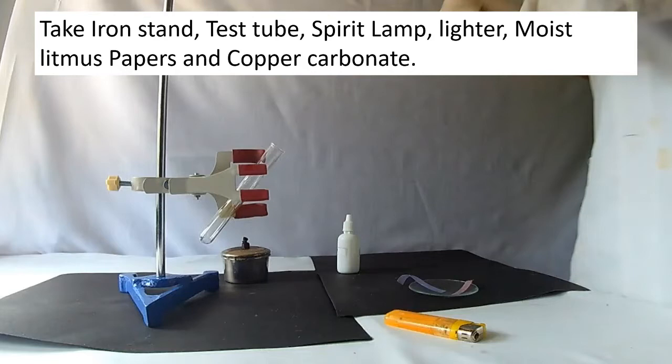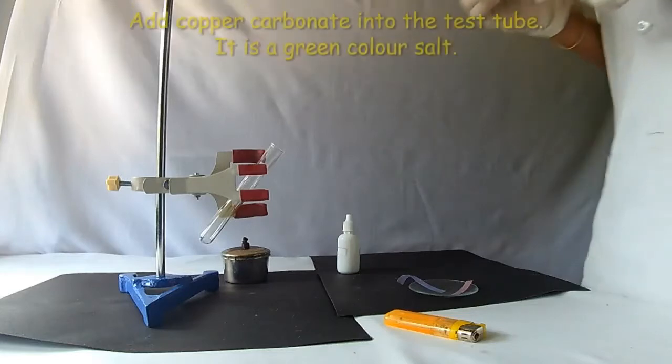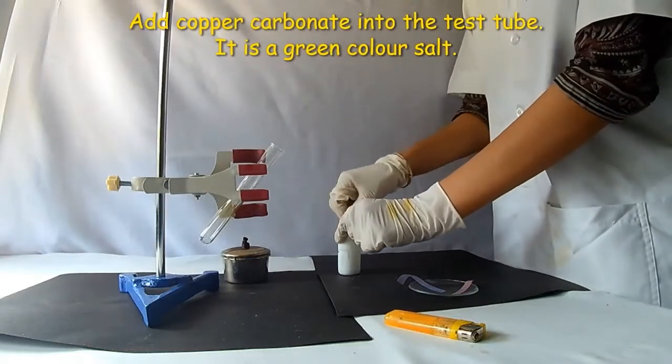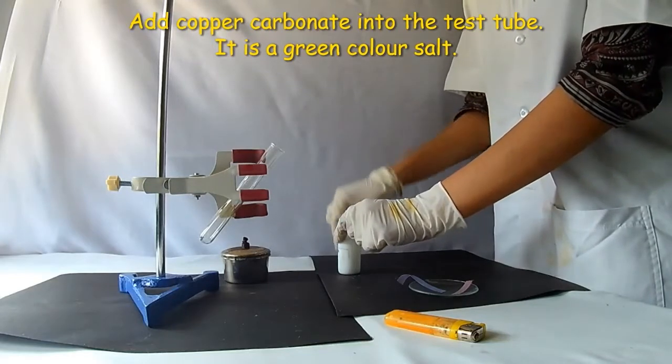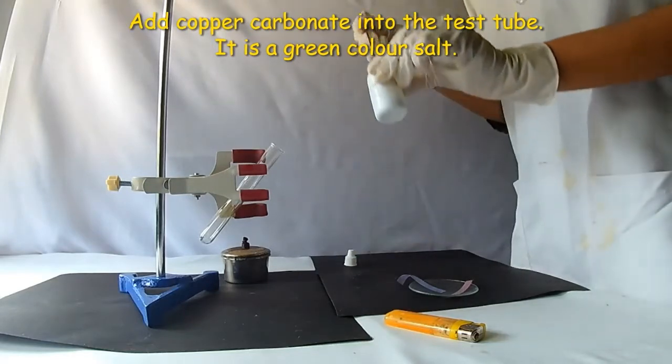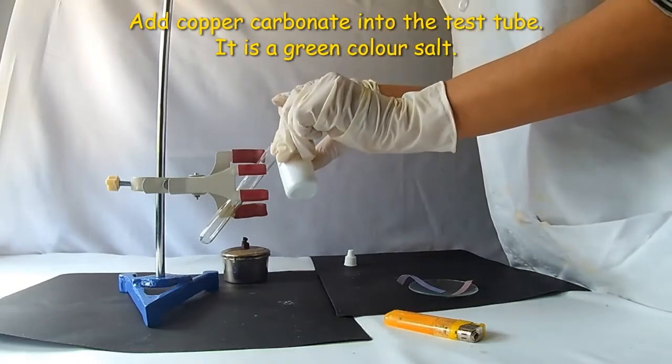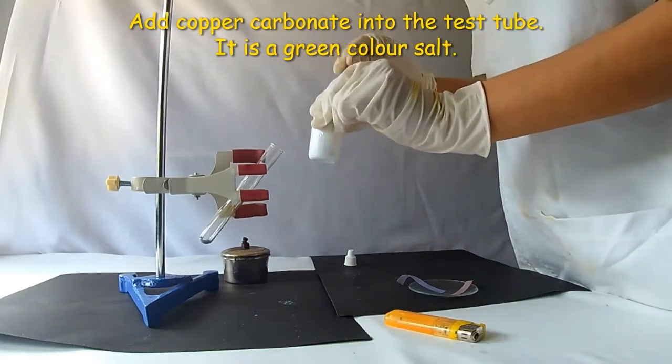Fix the test tube onto the iron stand carefully. Now, add copper carbonate into the test tube. Observe the color of the salt. It is a green color salt.